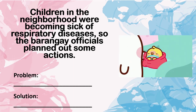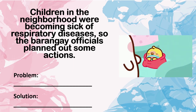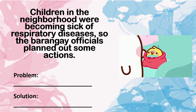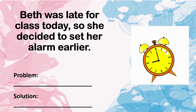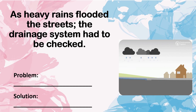Another example: 'Children in the neighborhood were becoming sick of respiratory diseases, so the Barangay officials planned out some actions.' Can you determine which is the problem and which is the solution? You can pause this video while answering. Another example: 'Beth was late for class today, so she decided to set her alarm earlier.' Can you determine which is the problem and which is the solution? The problem is 'as heavy rains flooded the streets,' and the solution is 'the drainage system had to be checked.'